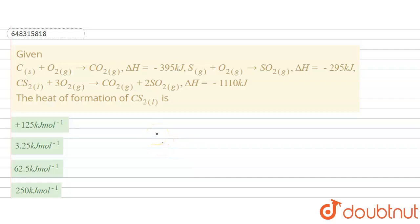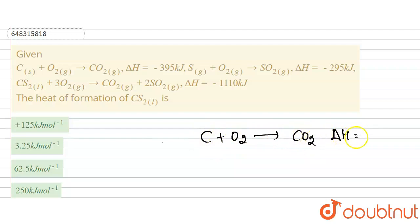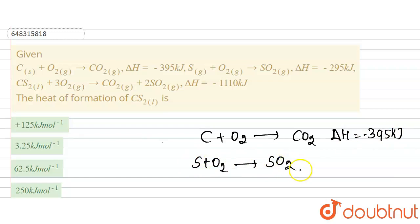The question we have today gives us three reactions. Reaction one: carbon combined with O₂ gives CO₂, with ΔH = −395 kJ. Reaction two: sulfur combined with oxygen gives SO₂, with ΔH = −295 kJ.